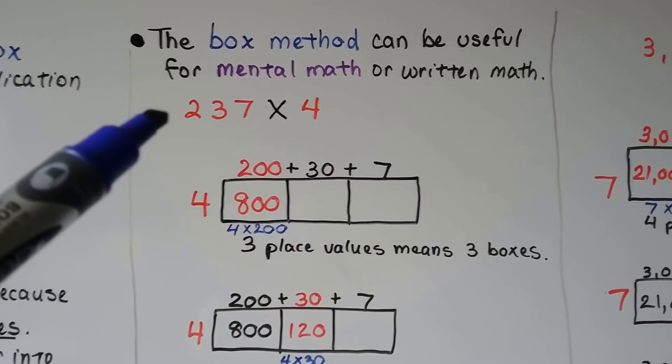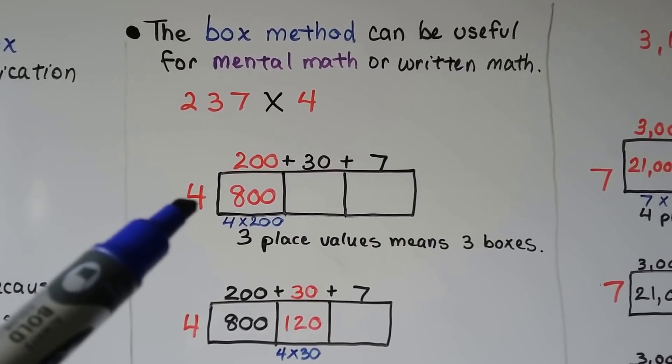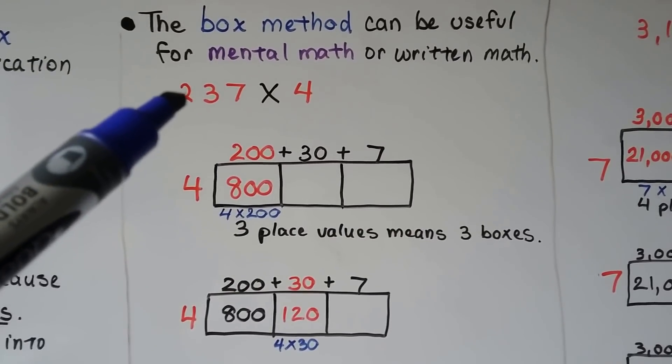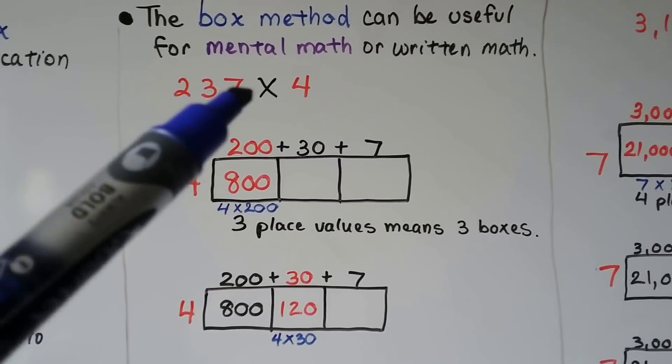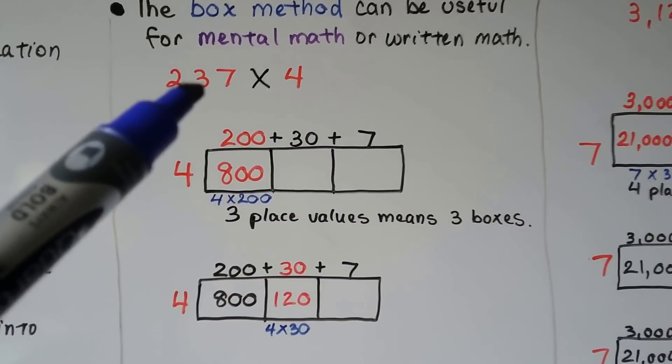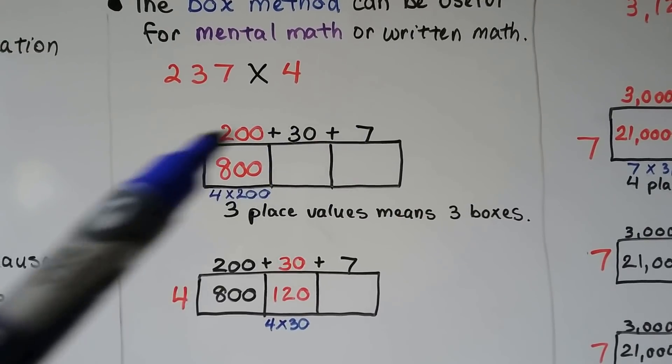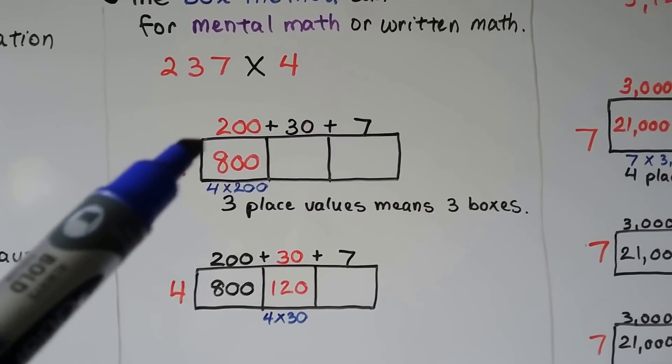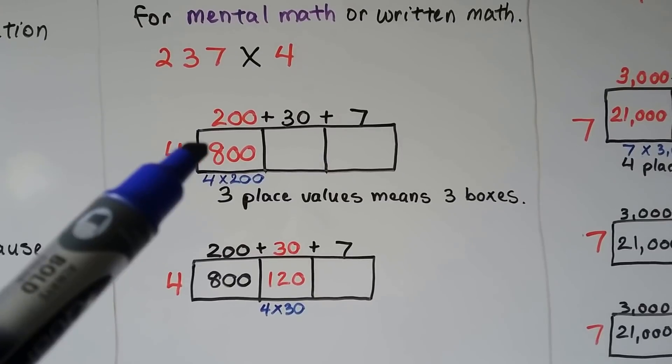For 237 times 4, we put the multiplier out here. We break this apart into its 3 place values. So we have three boxes. We have 200, a 30, and a 7. We multiply 4 times the 200 and get 800 and write it in the box.